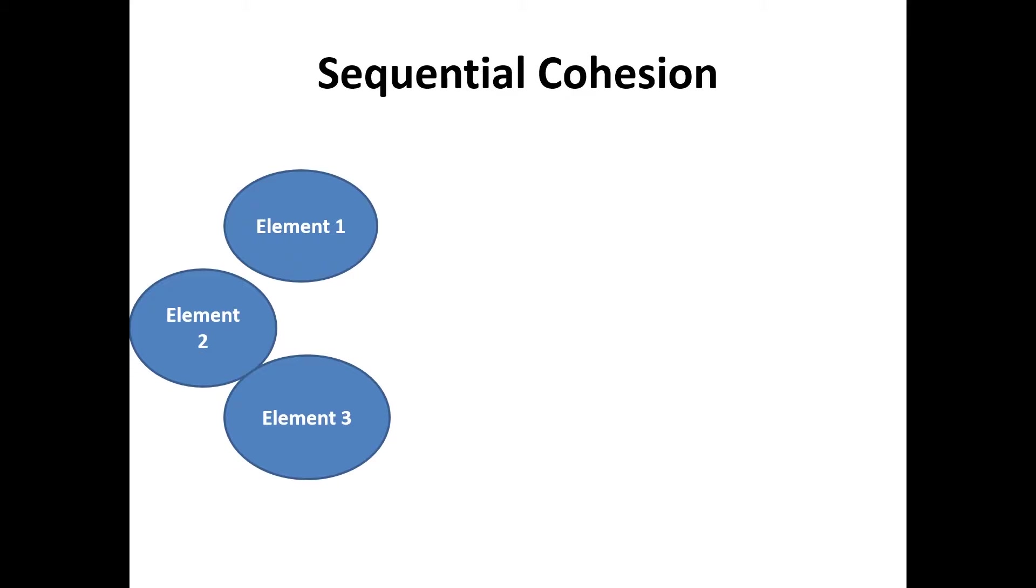Sequential cohesion. When elements of modules are grouped together, the output of one element serves as input to another, and so on. It is called sequential cohesion.